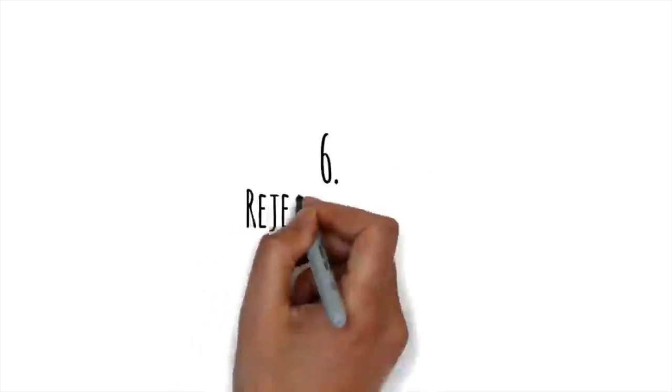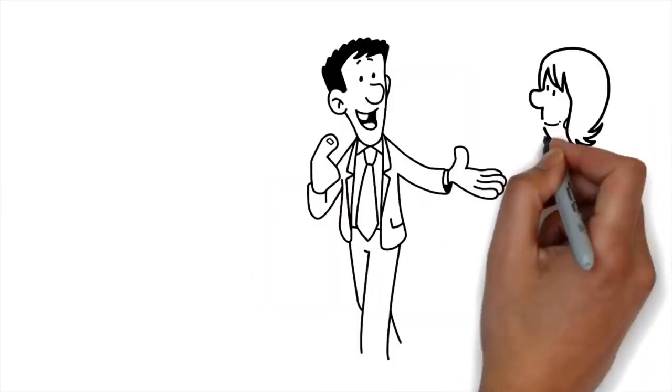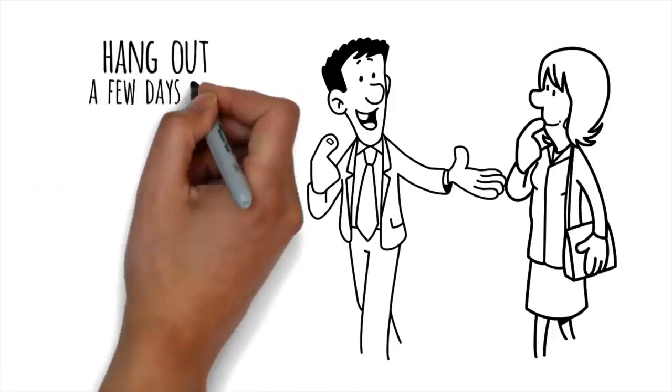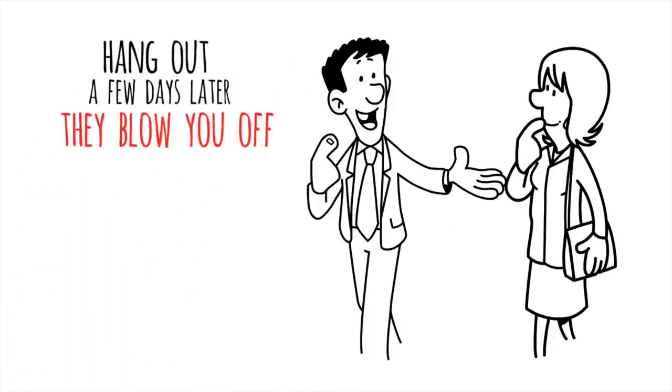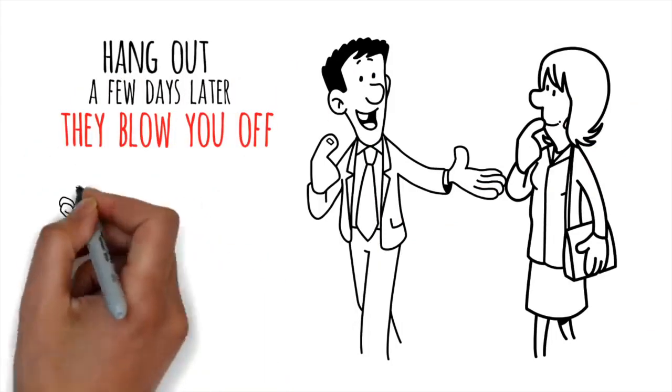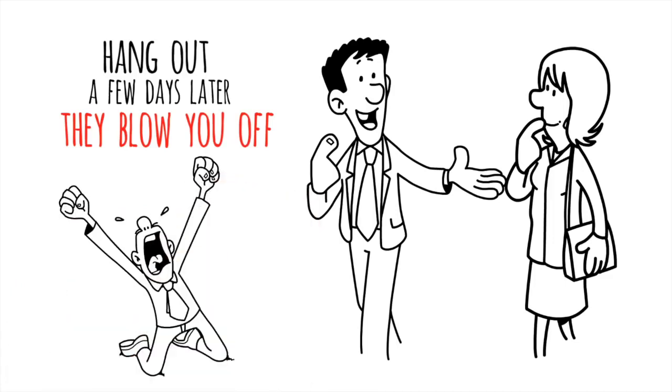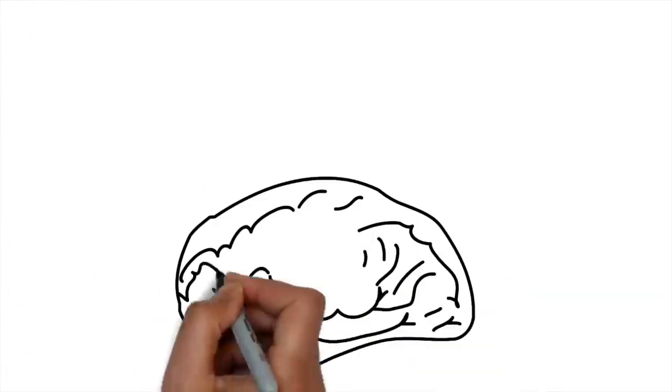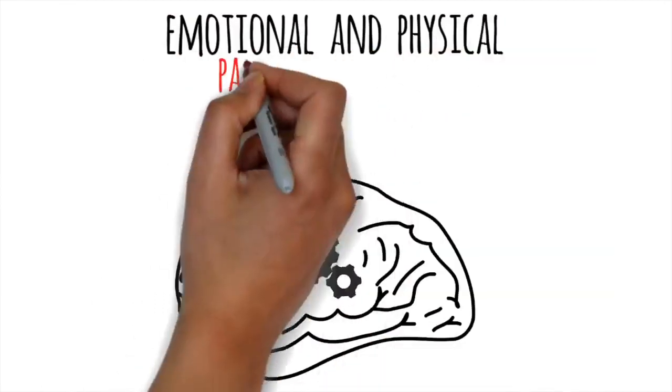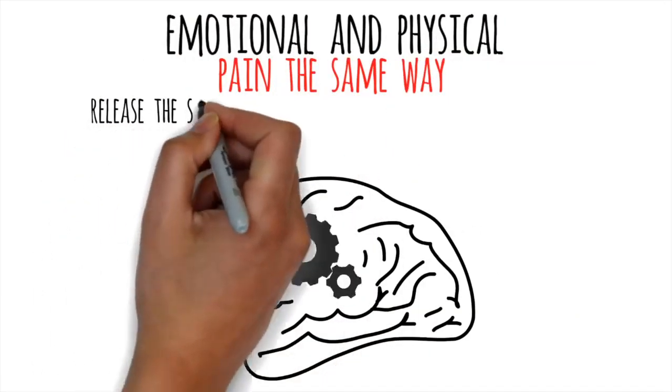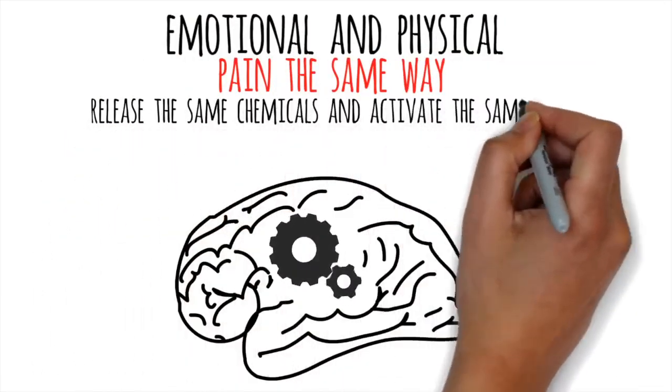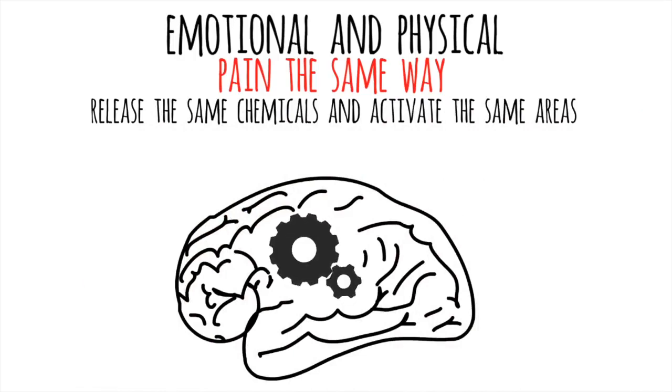Number 6. Rejection hurts. Imagine you made a new friend over the weekend, but when you ask them to hang out a few days later, they blow you off. What does that feel like? To your brain, you might as well have been punched in the face. That's because our brains process emotional and physical pain the same way. Both kinds of pain release the same chemicals and activate the same areas. If you've ever wondered why social rejection hurts so much, this is why.